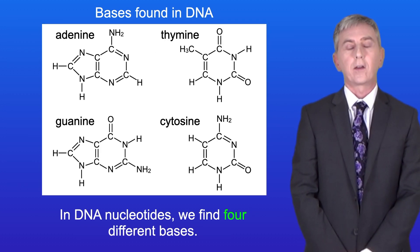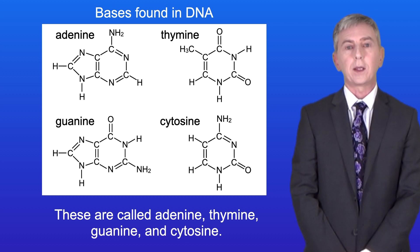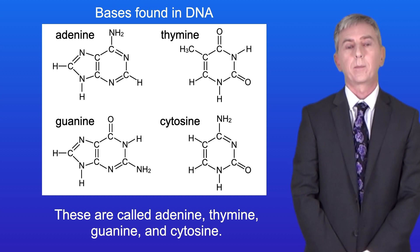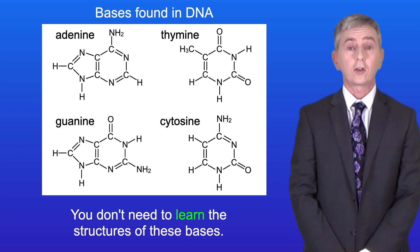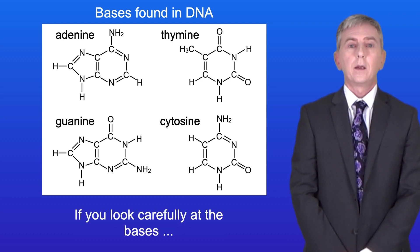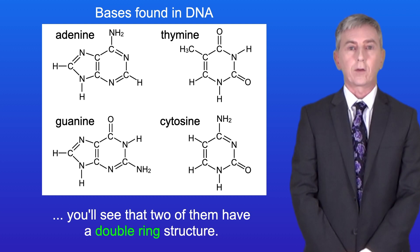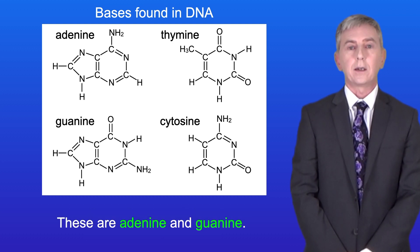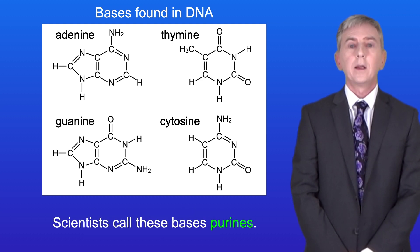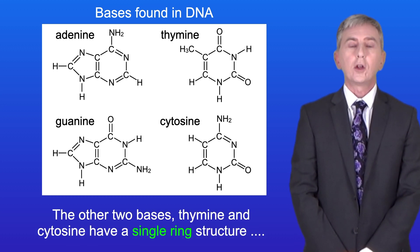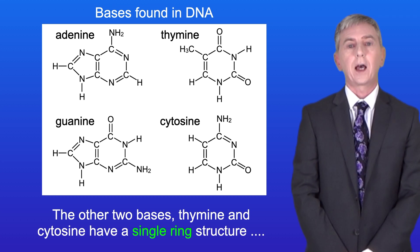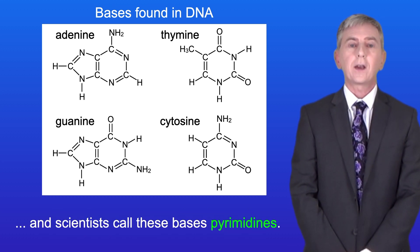In DNA nucleotides, we find four different bases: adenine, thymine, guanine, and cytosine. You don't need to learn the structures of these bases. If you look carefully at the bases, you'll see that two of them have a double ring structure — these are adenine and guanine, and scientists call these purines. The other two bases, thymine and cytosine, have a single ring structure, and scientists call these pyrimidines.